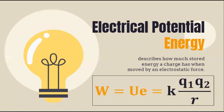Let's start with electric potential energy as we defined it. It describes how much stored energy a charge has when moved by an electrostatic force, given the equation: electric potential energy Ue equals K·Q1·Q2 over R, where K is Coulomb's constant, Q1 and Q2 are our charges, and R is the distance between them. The unit for electric potential energy is joules.